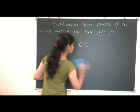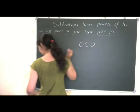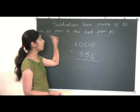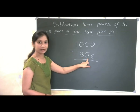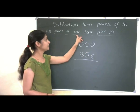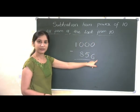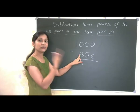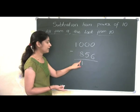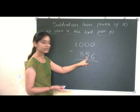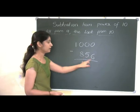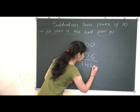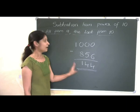Let me take one more example: 1000 minus 856. Our rule is: all from 9 and the last from 10. The last digit should be deducted from 10 and the other digits from 9. So 9 minus 8 gives 1 — you can think of it as: which number added to 8 gives 9? That is 1. Then 9 minus 5 gives 4, since 5 plus 4 is 9. Then 10 minus 6 gives 4. So 144 is the answer.